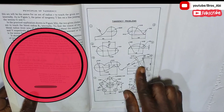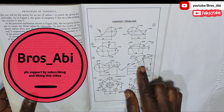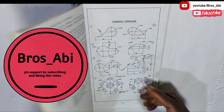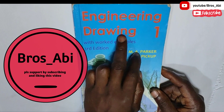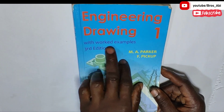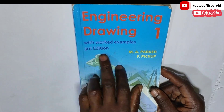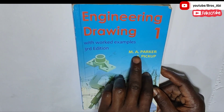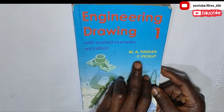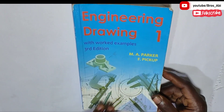I want to draw question 6 of the urgency problem for Engineering Drawing 1, with worked example third edition by M.A. Parker and Hef Pickup.